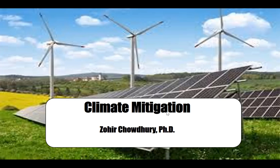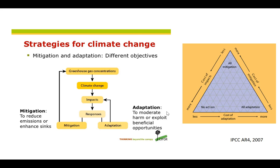Hi everybody, this is our children's climate lecture module and we are reaching towards the end. We'll talk about climate mitigation. In general, there are two different strategies when it comes to dealing with climate change: we can try to stop future warming, which is mitigation, or we can find ways to live in our warming world, which is adaptation.